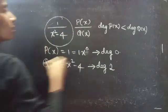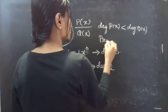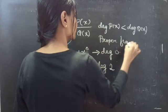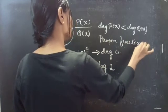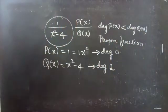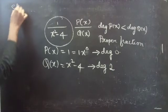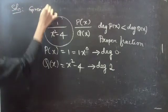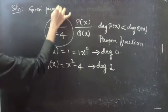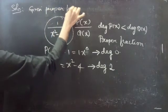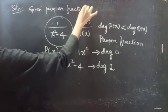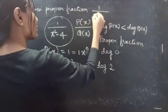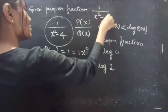From this we can say that the given fraction is a proper fraction. So our given proper fraction is 1 by x squared minus 4.